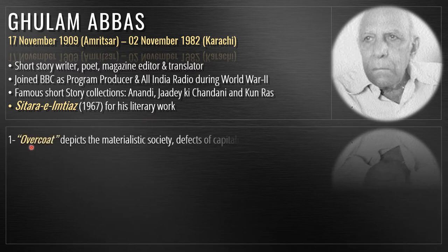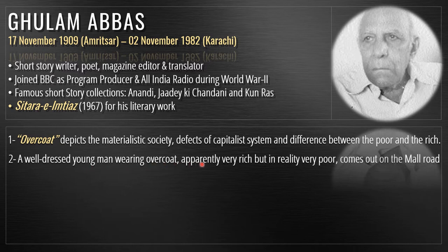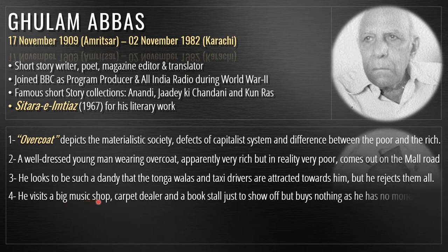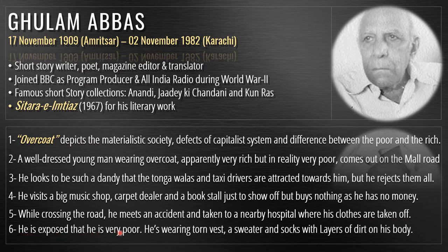Now let's discuss the brief summary of Overcoat. Overcoat depicts the materialistic society, defects of the capitalist system, and the difference between the poor and the rich. A well-dressed young man wearing an overcoat, apparently very rich but in reality very poor, comes out on the mall road. He visits a big music shop, carpet dealer, and a book stall just to show off but buys nothing. While crossing the road he meets an accident, is taken to a nearby hospital, and is exposed as very poor — wearing a torn vest, a sweater full of holes, and dirty socks.